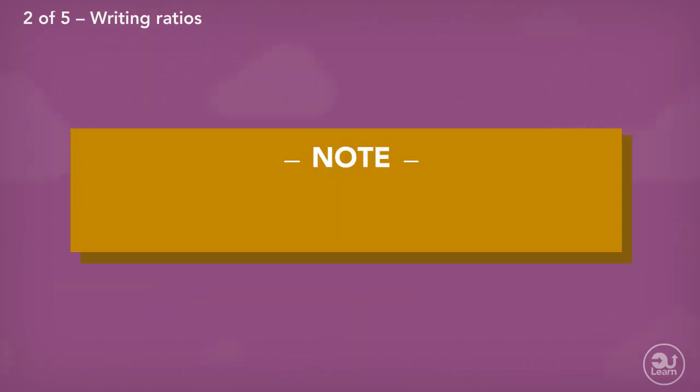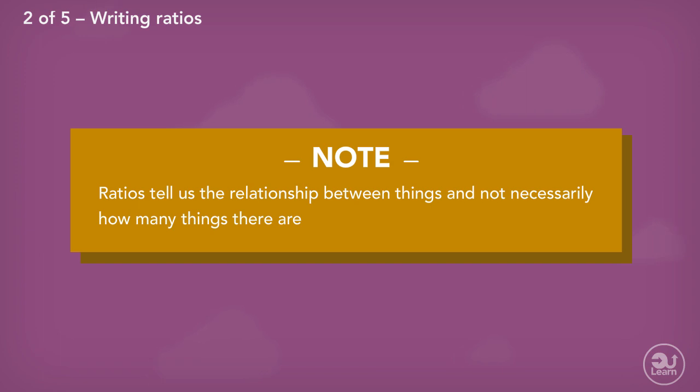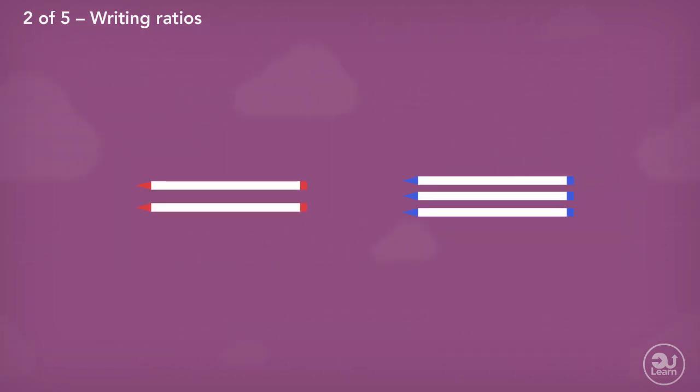Another important thing to remember is that ratios do not tell us how many items we have. They only tell us the relationship between the items. For example, if I have red pens and blue pens in the ratio two to three, that means for every two red pens I have three blue pens.